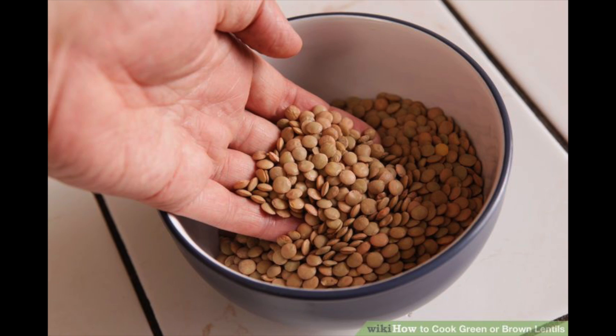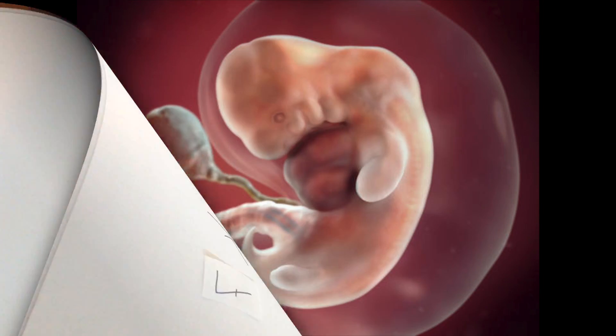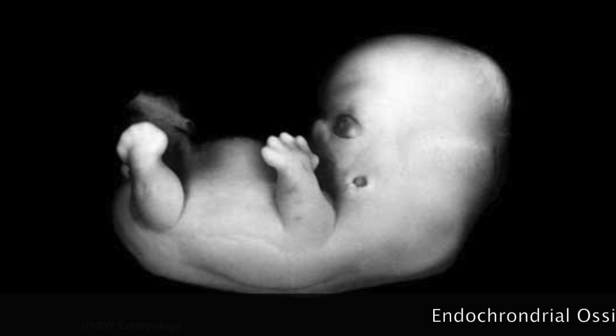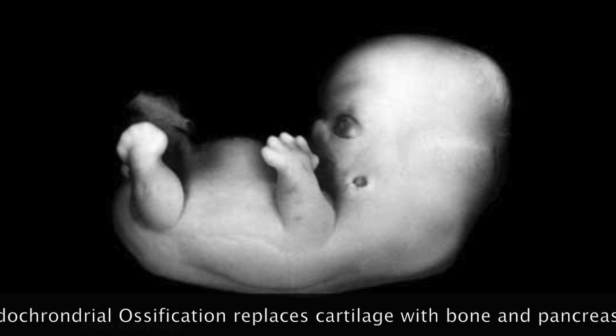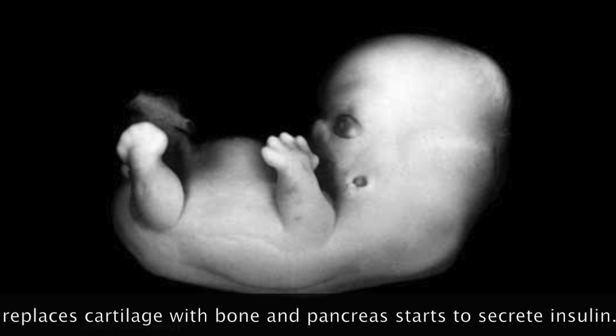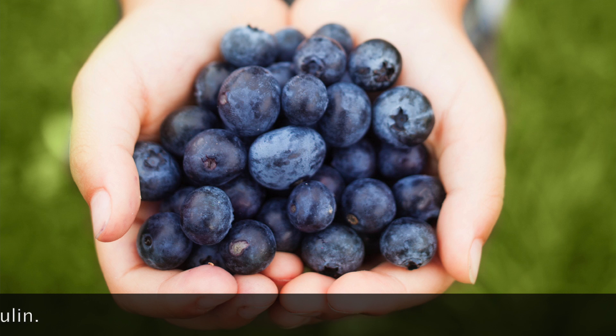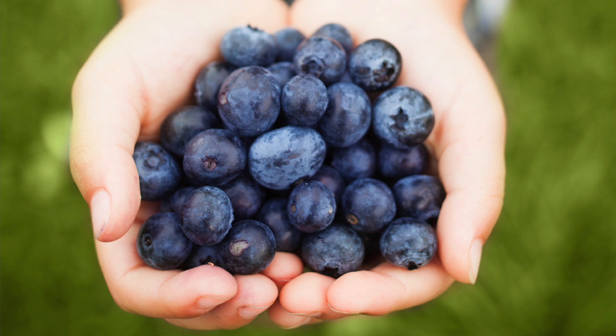By the seventh week, the embryo has doubled in size. Its little hands and feet that look more like paddles are emerging from the developing arms and legs. Cartilage is starting to be replaced with bone by endochondral ossification in the limbs and throughout the rest of the embryo. The newly developed pancreas also starts to secrete the hormone insulin to aid in future digestion. The embryo is now about the size of a blueberry.